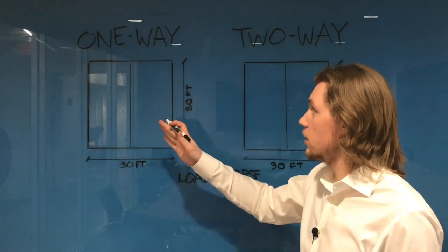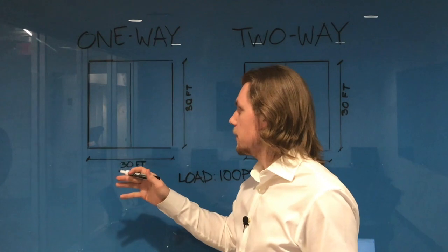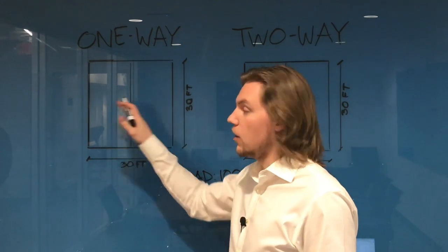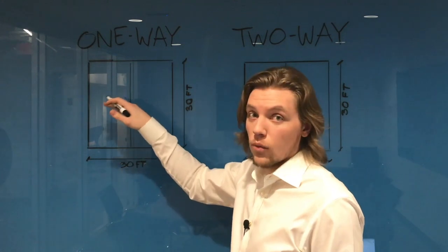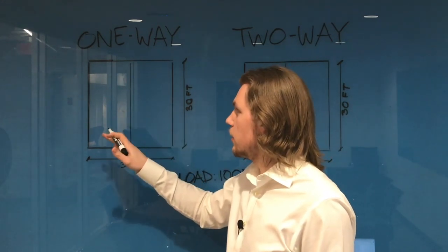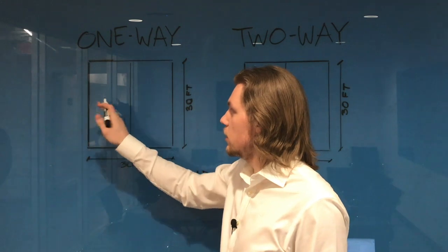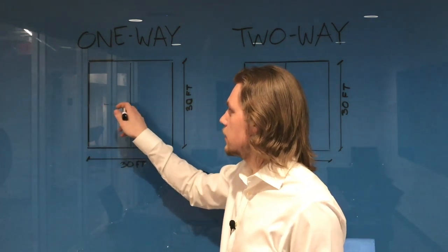So first, let's take a look at our one-way load or one-way area, one-way slab. So the first thing you want to do is figure out what way the slab is spanning or what way the actual one-way distribution is going to be. So for example, in this case, you would expect a slab to span this direction.